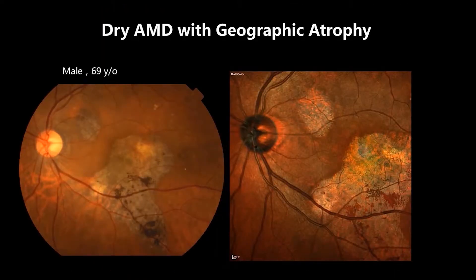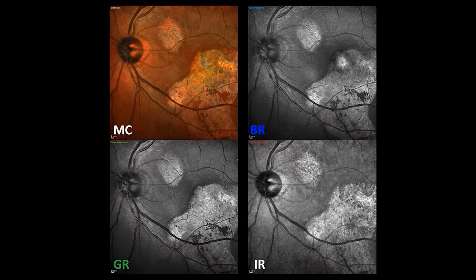In dry AMD with geographic atrophy, multicolor image has its advantage. The area of atrophy was demarcated better than on color fundus photo. Infrared reflectance showed the best detail of RPE atrophy. In blue and green reflectance, as well as multicolor, we can see RPE migrations.